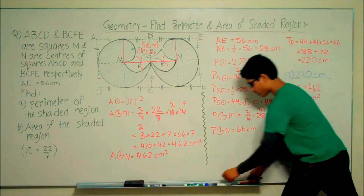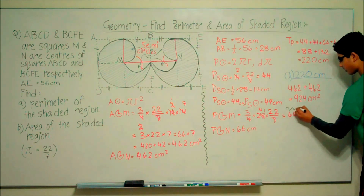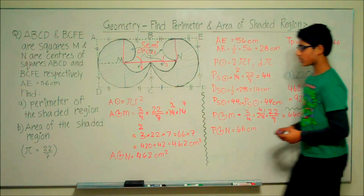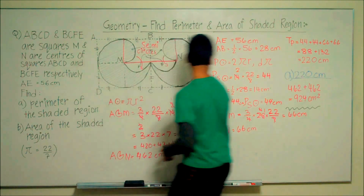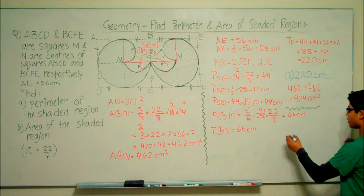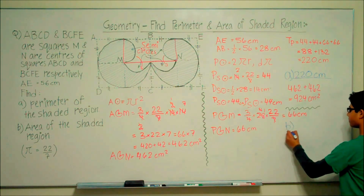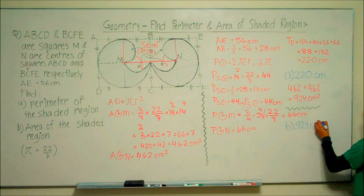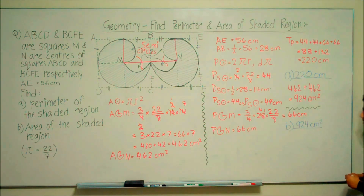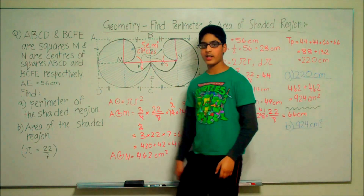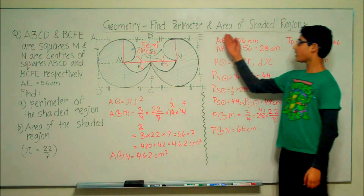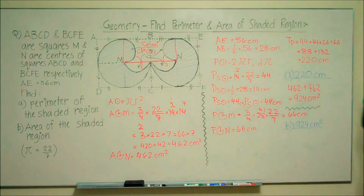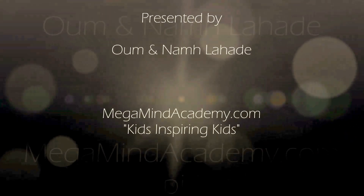The answer to question B: the area of the shaded region is 924 centimeters squared. Today we learned about geometry, finding the perimeter and area of the shaded region. Thank you for watching this video.